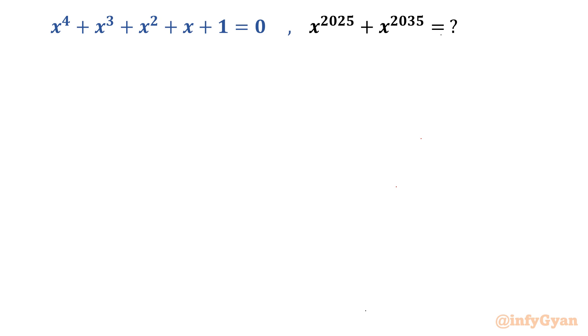Hello everyone, welcome to Infigyan once again in this very exciting video of algebraic expressions from Olympiads. In this video we will be solving two problems. First one is we have to simplify x power 2025 plus x power 2035 if x power 4 plus x cube plus x square plus x plus 1 equal to 0 is given. I am going to solve this question by two methods and then we will take up the second question. Let's get started.